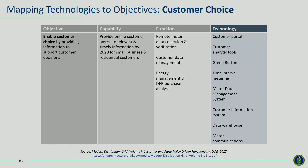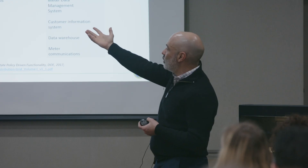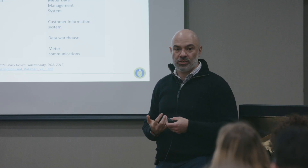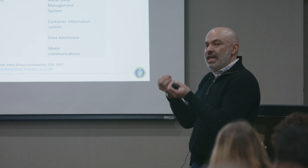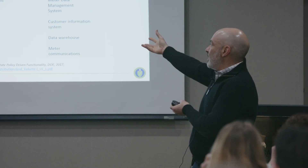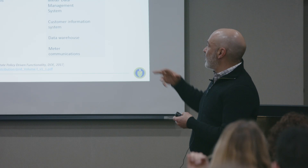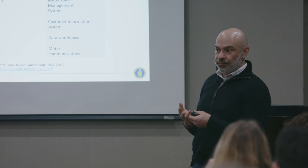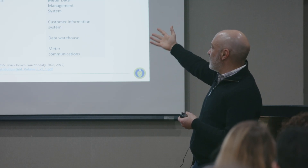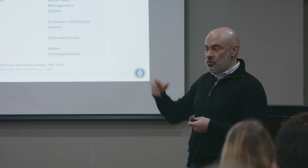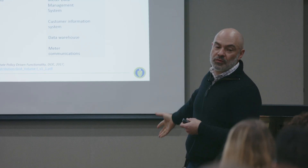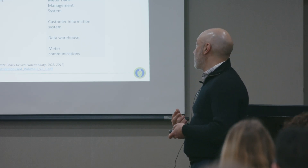Another example: customer choice. The goal here is more diffuse — to provide information to support customer decisions. The taxonomy becomes even more important. The capability is providing online customer access with relevant and timely information. Functions include data collection, data management, energy management, and DR purchase analysis. Again, we're decomposing it down, with a number of different technologies supporting those capabilities and functions.